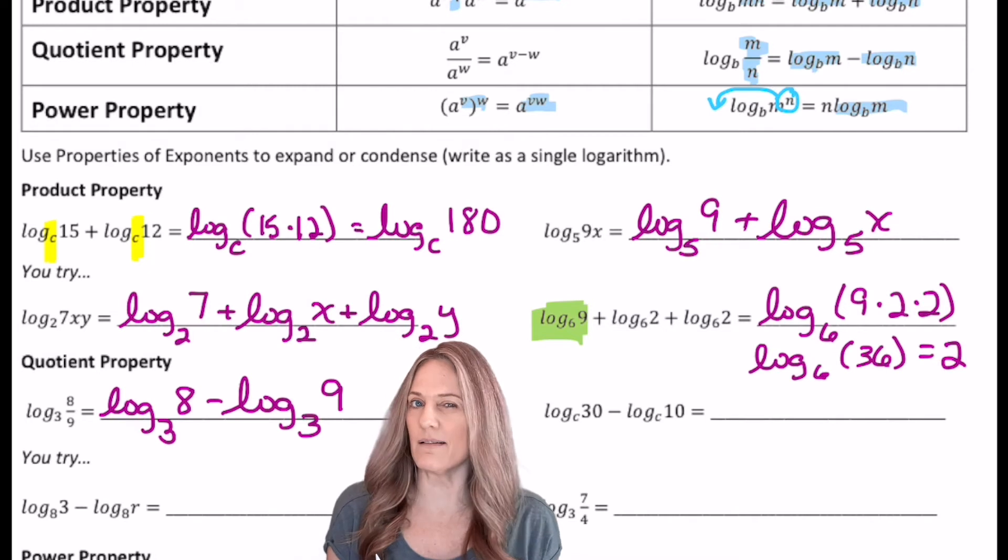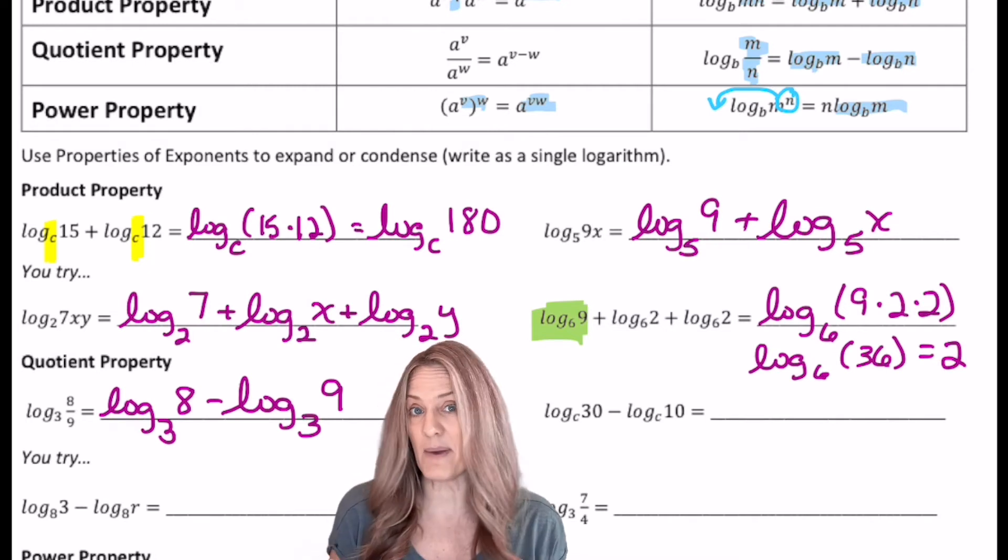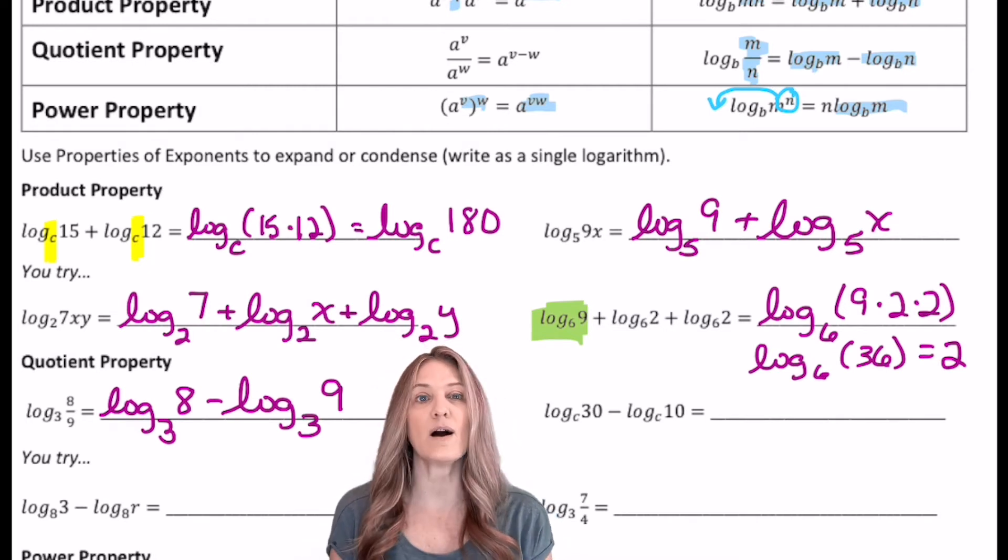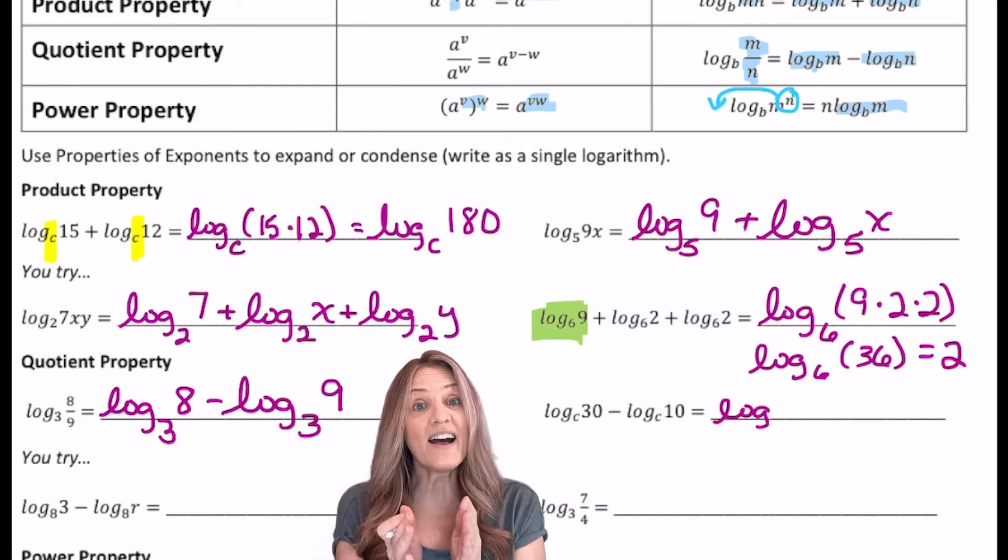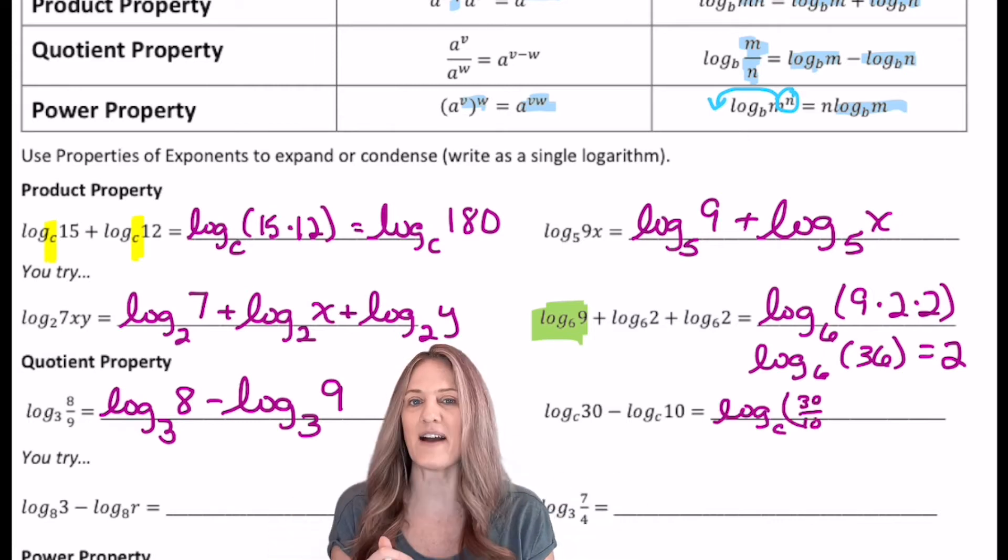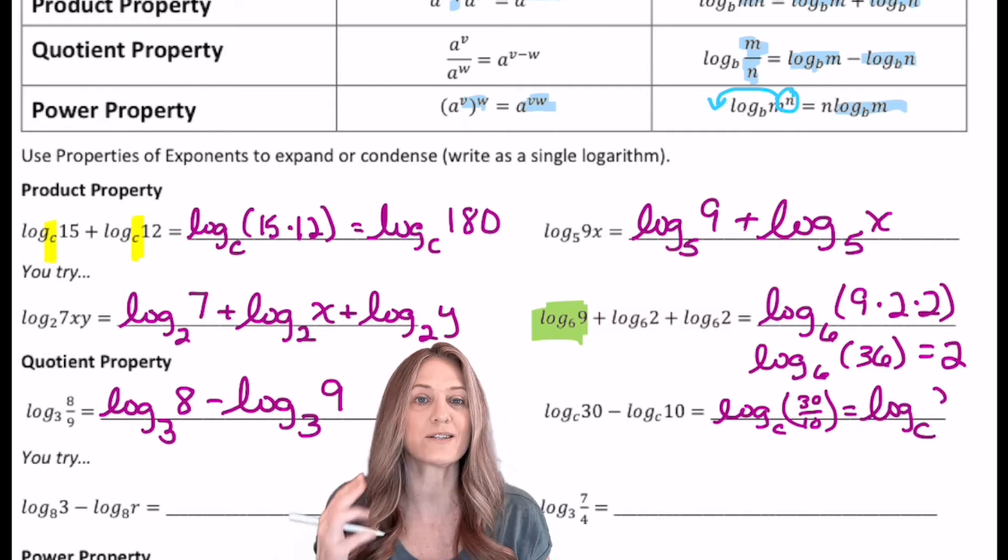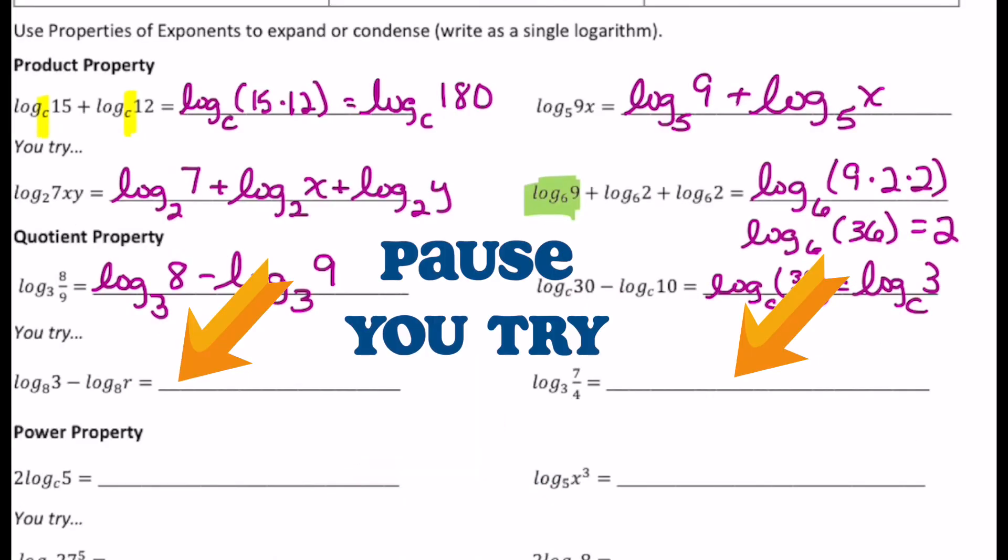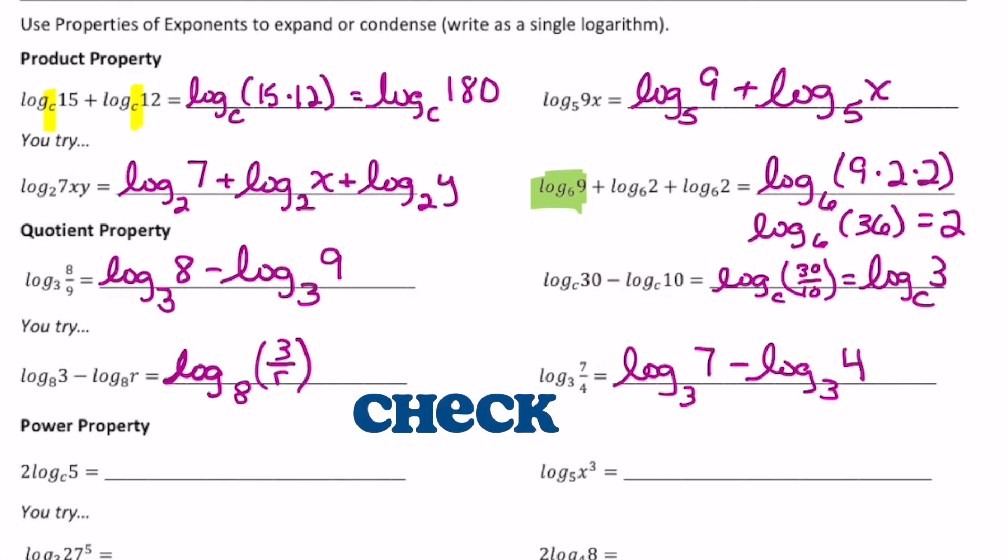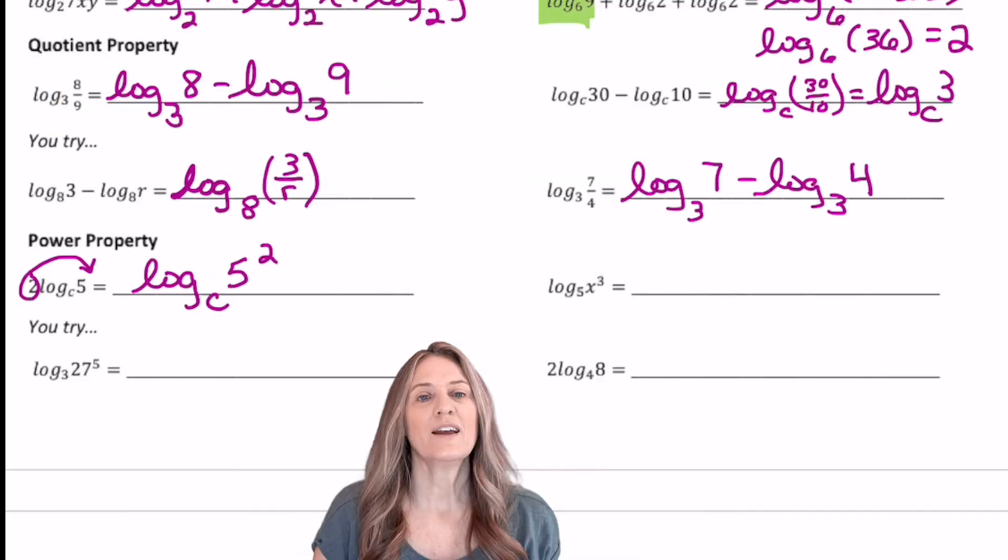Rewrite this with a single log. So log base c of 30 minus log base c of 10 becomes log base c of, that's right, divide the two arguments, 30 divided by 10, which of course reduces to 3. Check your answers.